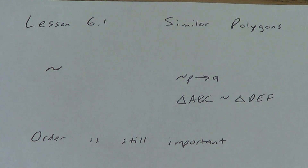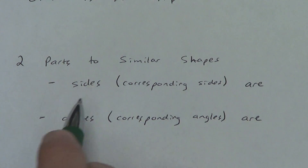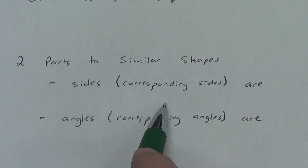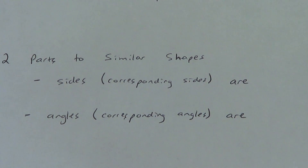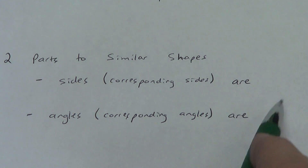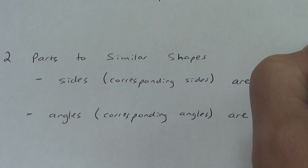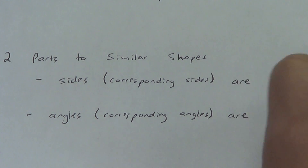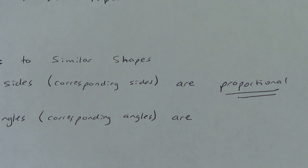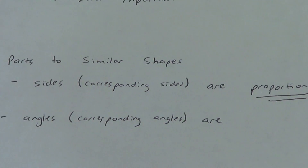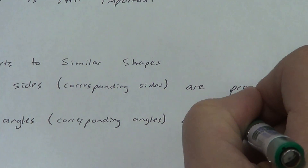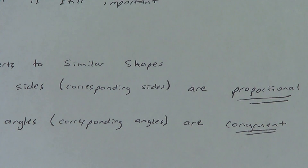The next thing is really, really, really important — this is basically our definition for similar shapes, and there are two parts to it. We're going to talk about sides and we're going to talk about angles. The corresponding sides — remember, 'corresponding' means in the same position — are proportional. Make sure you can spell that correctly. And then the corresponding angles are congruent, which you should already know means they have the same measure.